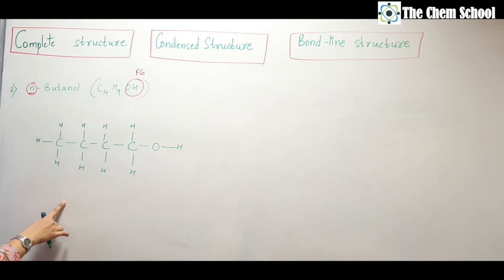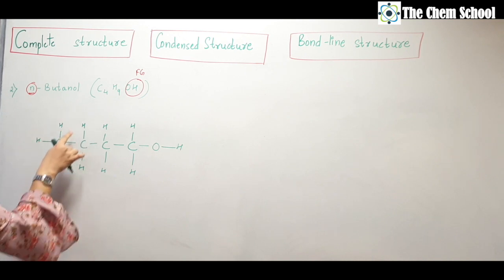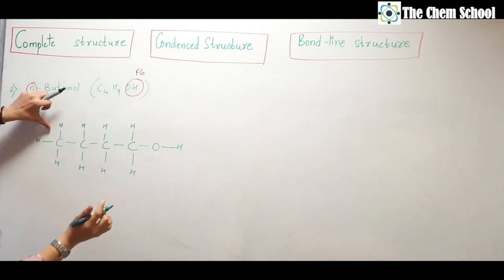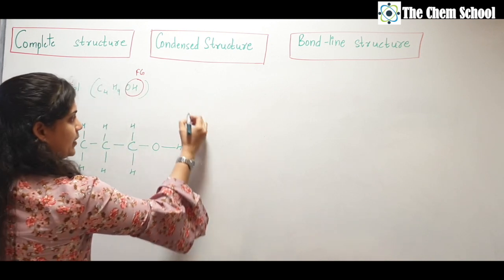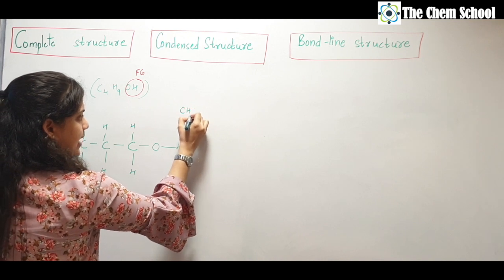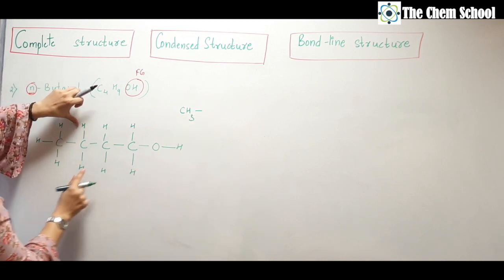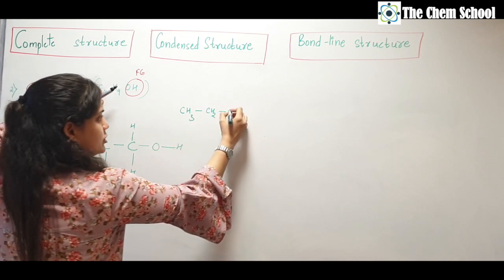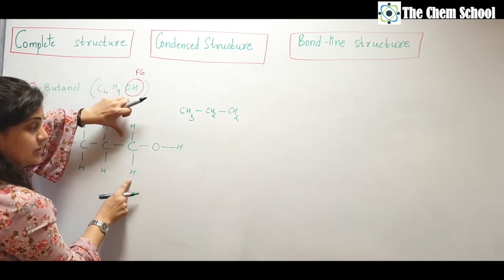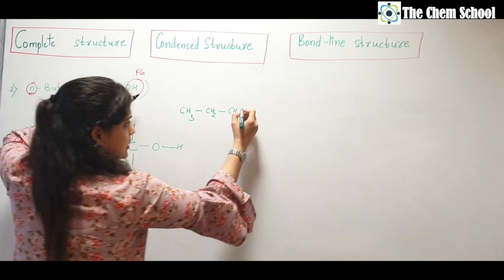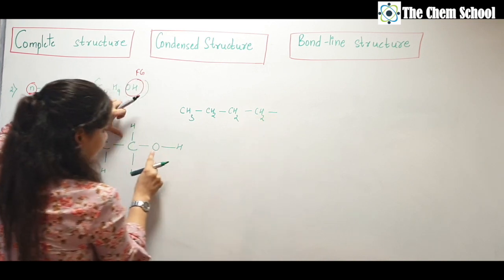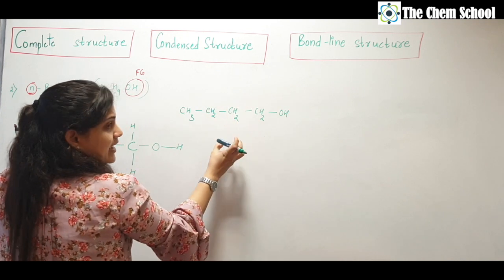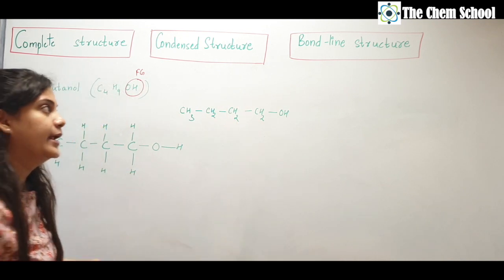For the condensed structure of n-butanol, write all the hydrogens together on each carbon. The first carbon has three hydrogens: CH₃. The second carbon has two hydrogens: CH₂. The third carbon has two hydrogens: CH₂. The fourth carbon has two hydrogens and then has OH attached — so this gives the condensed structure.